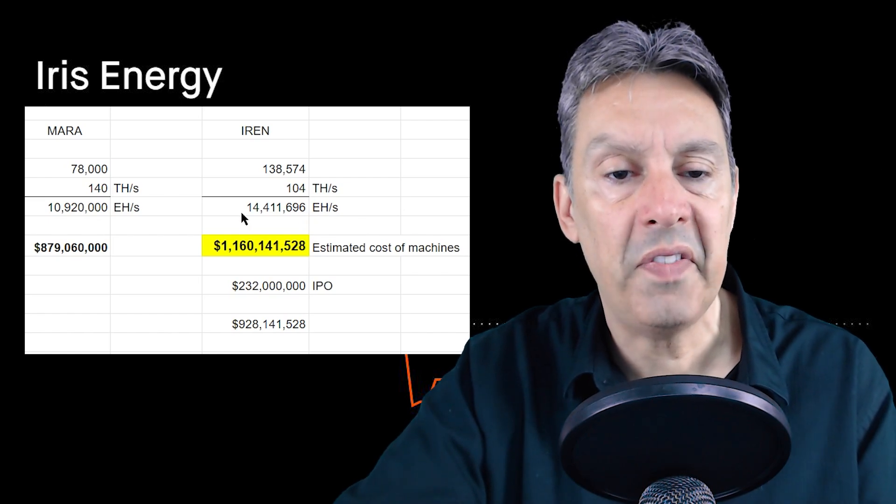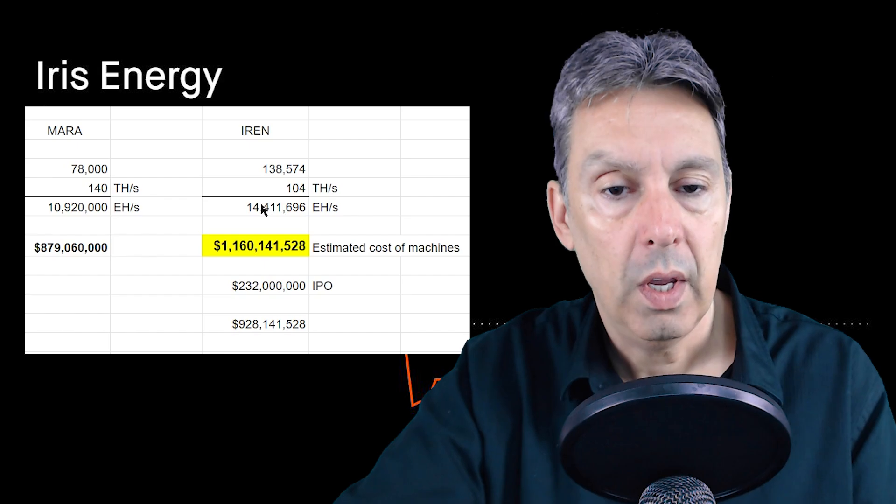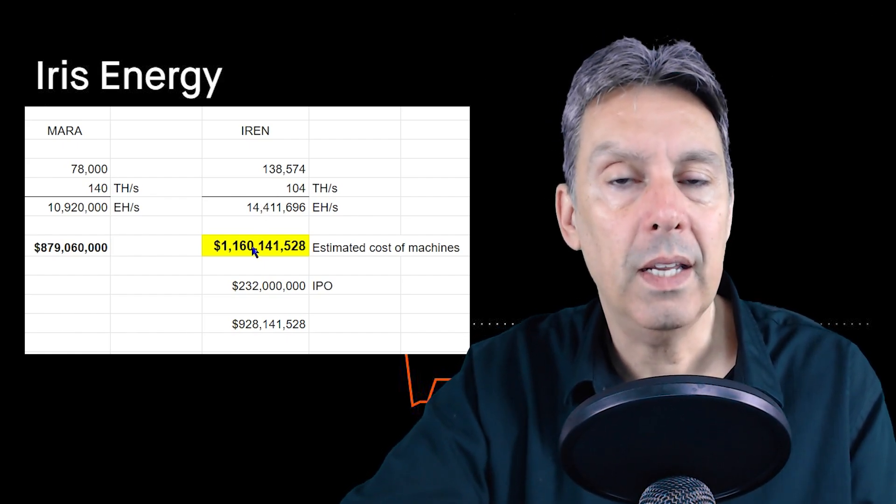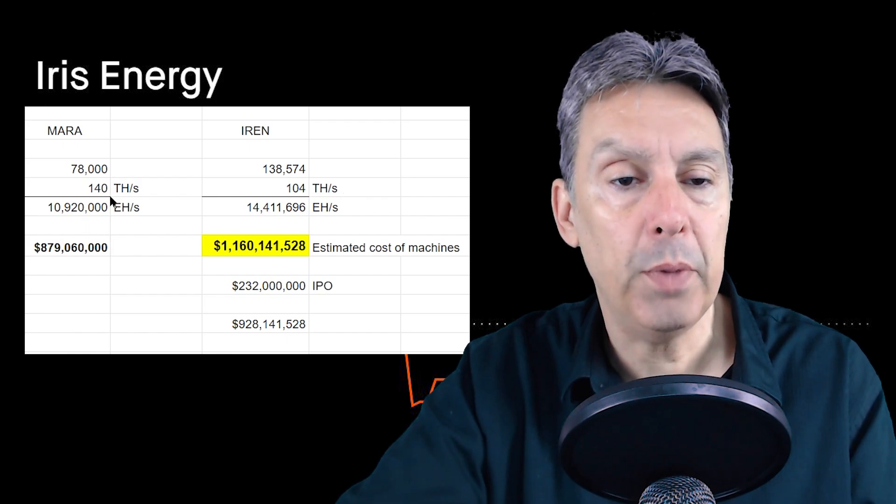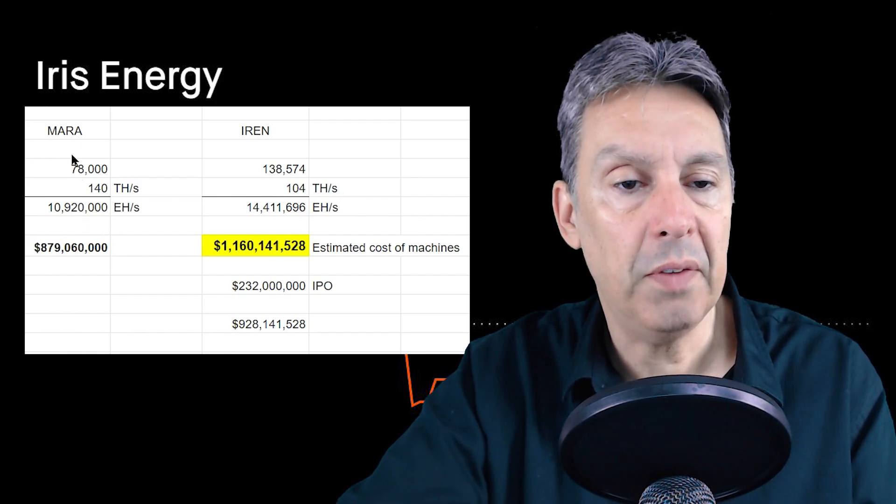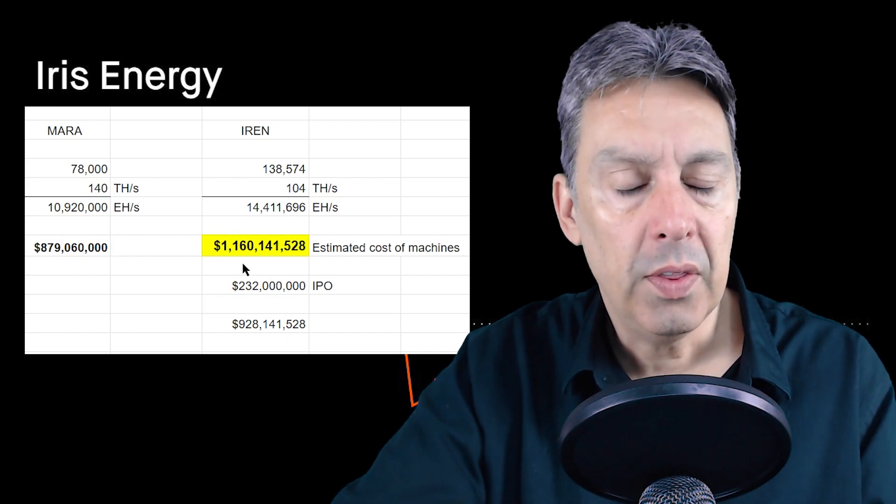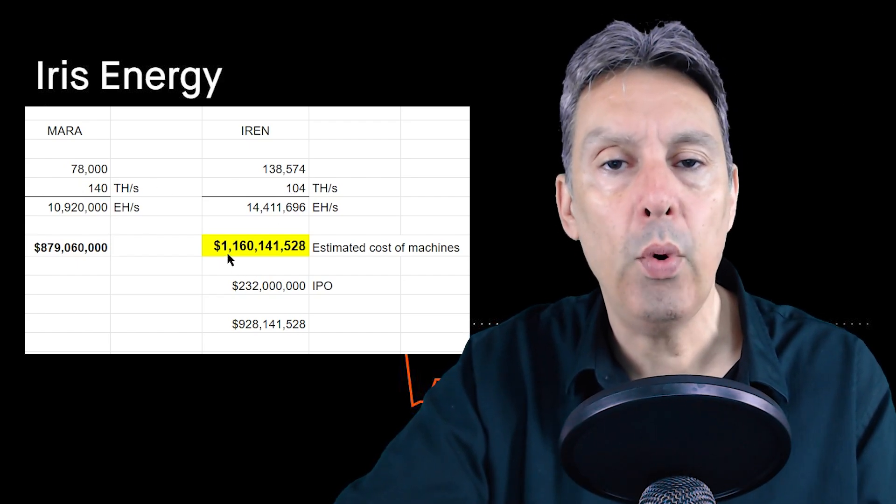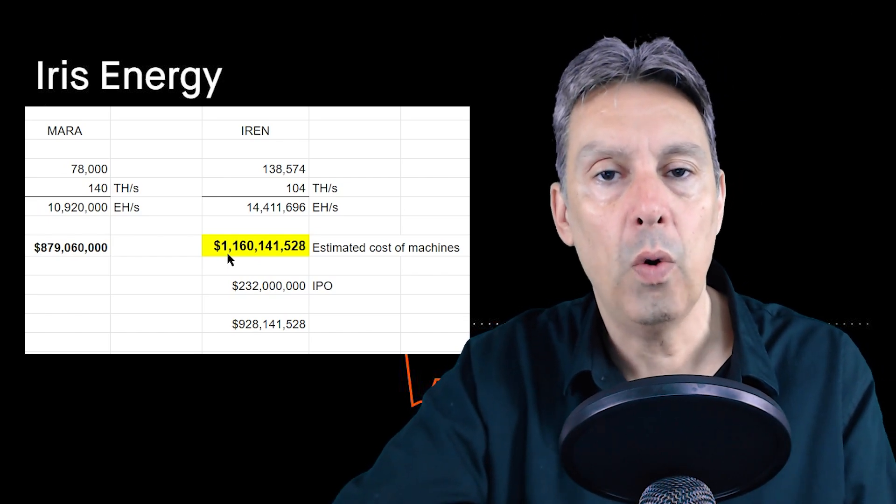If they paid similar price per terahash, so not per machine because Marathon bought different machines, but if they paid a similar price per terahash, then that's going to be just short of about $1.2 billion to buy all those machines. That is obviously an estimate. I don't know what they secured those machines for. They may have done a little bit better than that. They may have done a little bit worse than that, but give or take they're going to need a billion dollars to buy all these machines in the next two years.